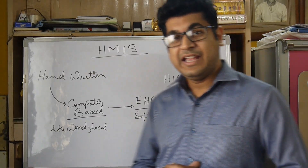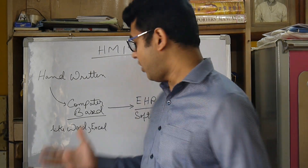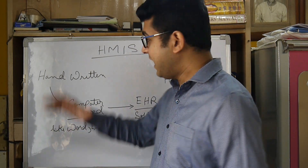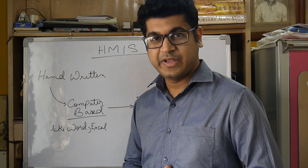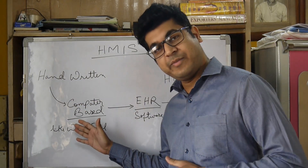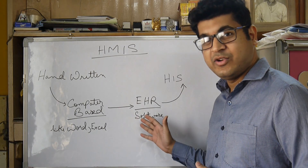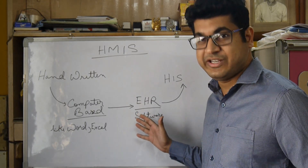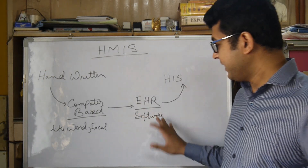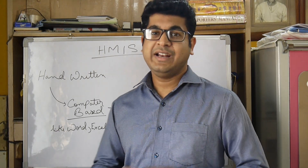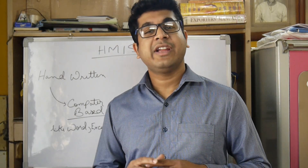That first integrated information management system was EHR. What you see today in hospitals is actually an evolved form of both the computer-based system and the handwritten system. So the evolution went from handwritten to computer-based to EHR. But EHR had its limits — it was a software where electronic health records were maintained, and electronic health records alone were not sufficient to run a hospital.